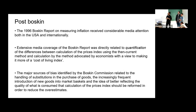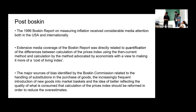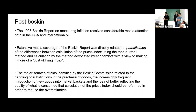The post-Boskin report of 1996 on measuring inflation received considerable media attention both in the US and internationally. Extensive media coverage was directly related to the quantification of differences between the then-current calculation method and the method advocated by economists aiming for a cost-of-living index. The major sources of bias identified related to the handling of substitution in goods purchases, the introduction of new goods into market baskets, and better reflecting the quality of what is consumed — with a view to reducing overestimates.